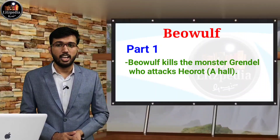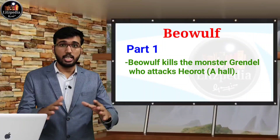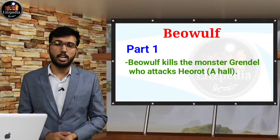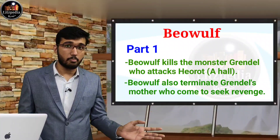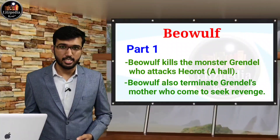Grendel is a monster who attacks Heorot — which is actually the hall of the Danish king Hrothgar. And Beowulf kills the monster during the fight. Later, Grendel's mother comes to seek revenge on Beowulf because he killed the monster Grendel. And Beowulf successfully kills Grendel's mother too. That is regarding the first part of Beowulf.